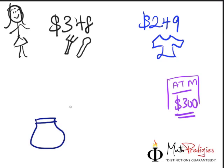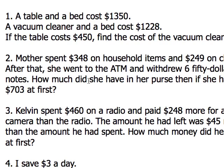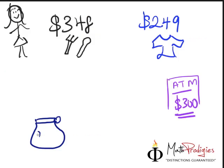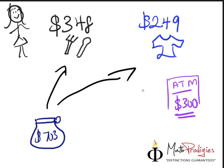And the question says, how much did she have in her purse then if she had $703 at first? That means, at the start, she had $703 in her purse. And then, what happened was she went to buy this. Then, she bought this. And then, after that, she took in some more money from the teller machine.